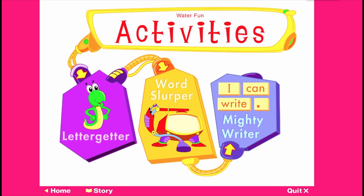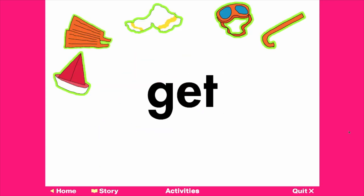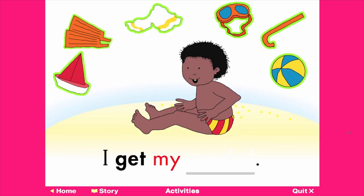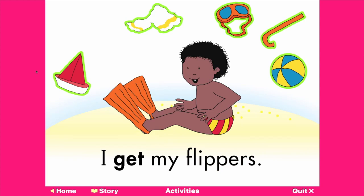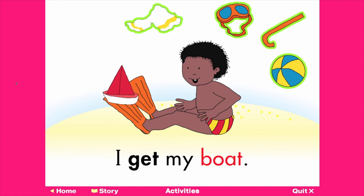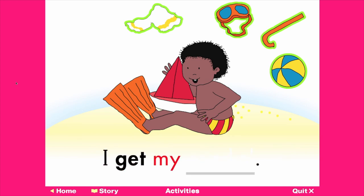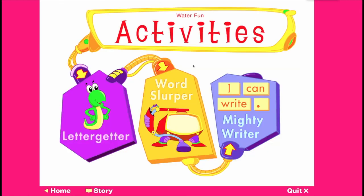In the literacy section, these skills include phonics, letters and their sounds, words and writing. This activity focuses on the high-frequency word 'get'. In repeating the sentence structure from the story, it revisits the high-frequency words 'I' and 'my'.